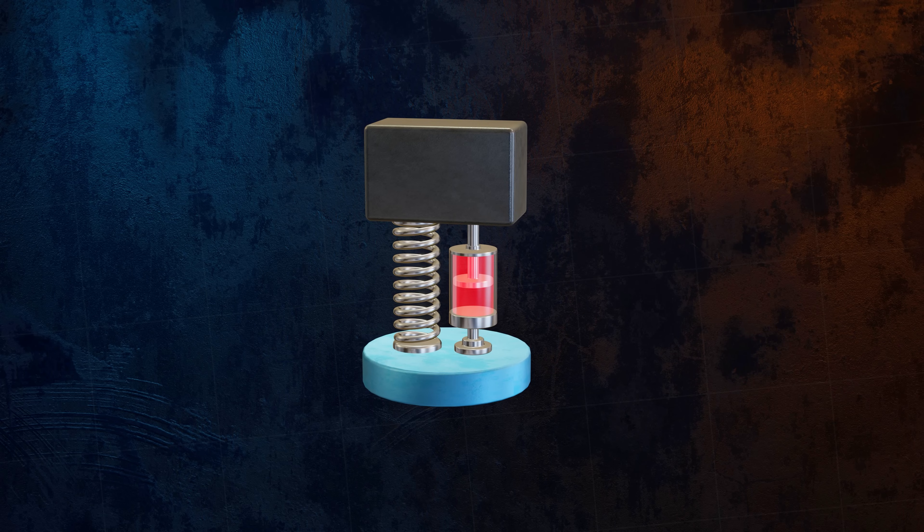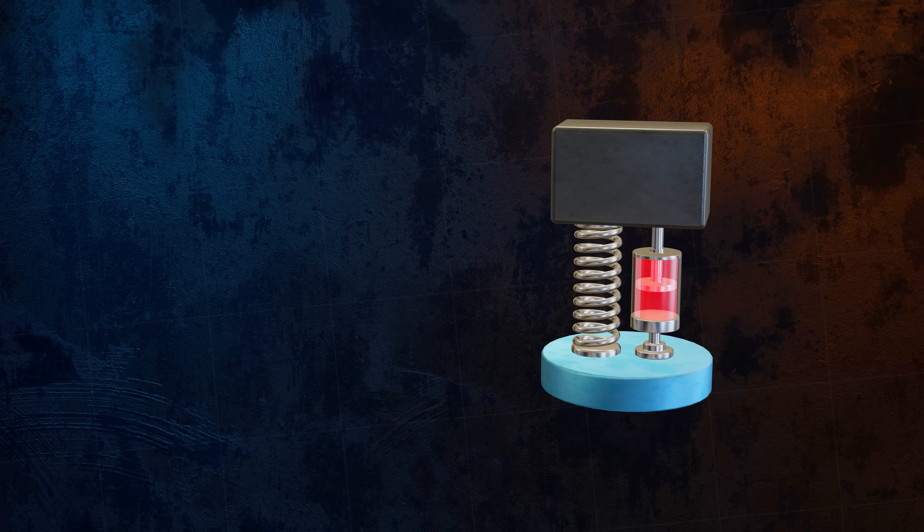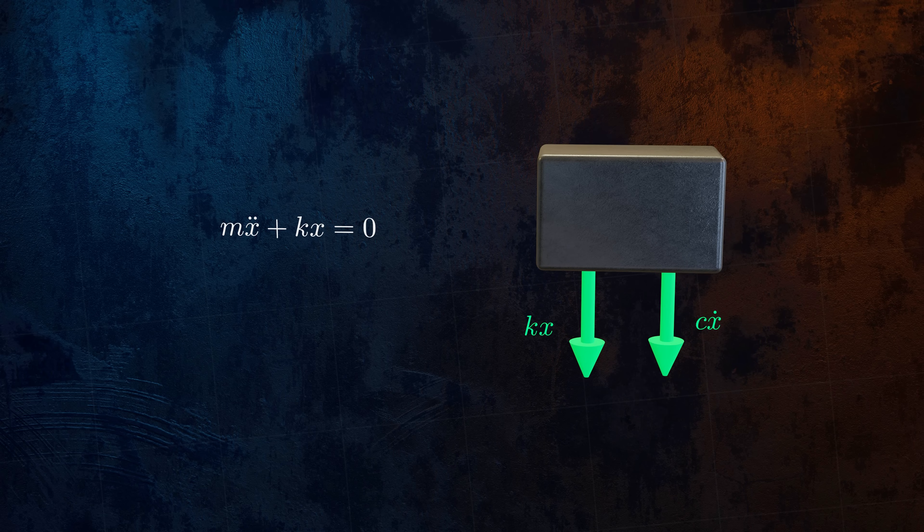If we include the dashpot in our spring mass model, the equation of motion is the same as for the undamped system but also includes the damping force. It's a little more difficult to solve this equation, and the solution will depend on the amount of damping.